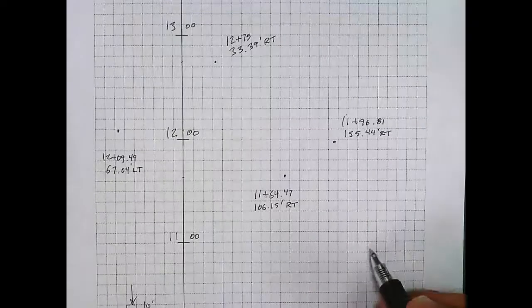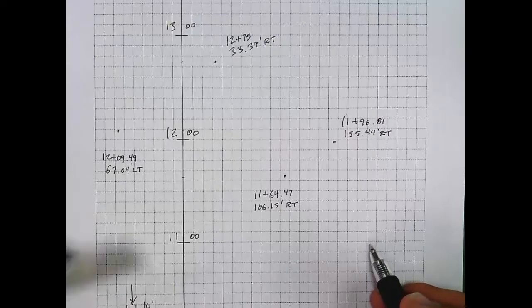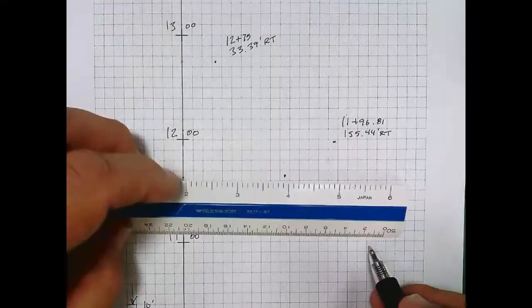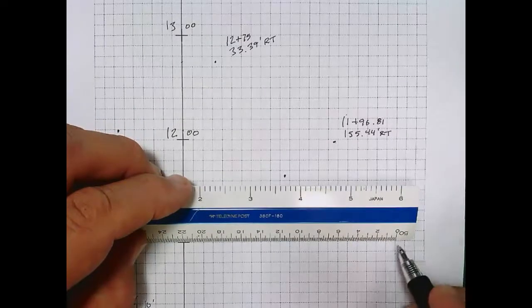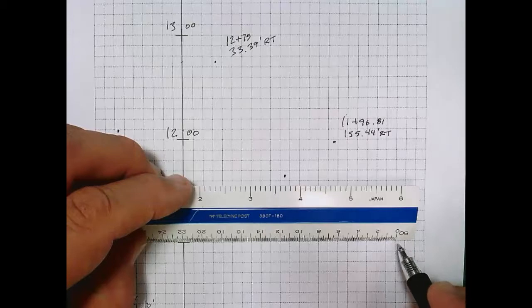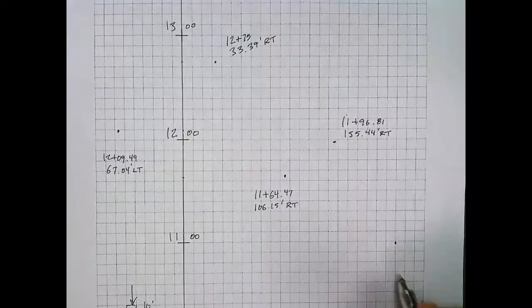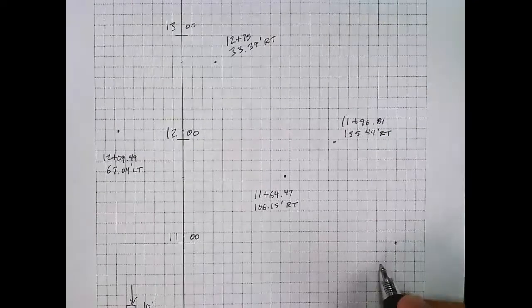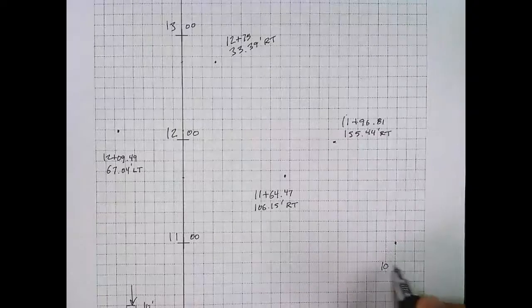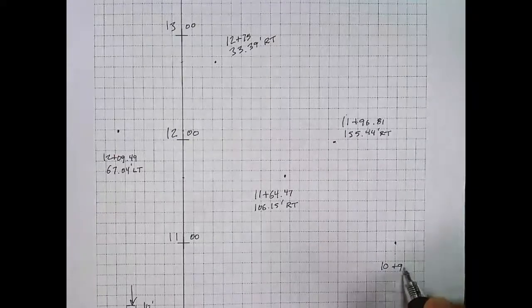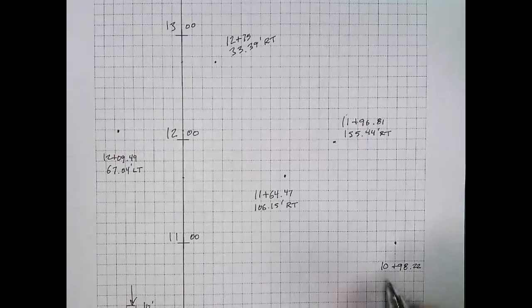So point six you can pretty much guess is going to be down here to the lower right corner of the drawing. Once again, I'm using the scale to make sure that I don't blunder and miscount squares, which is easy to do. Plotting this best I can, and then you can see we will label that with the station here at point six. The station is 10 plus 98.22 and our offset is 220.11 feet right.